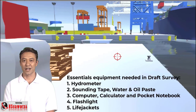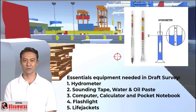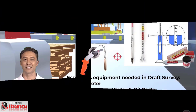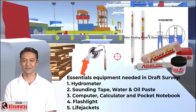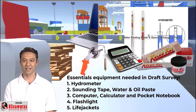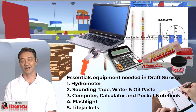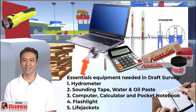Here are some essential equipment needed in draft survey: one hydrometer, one sounding tape, one water and oil paste, three computers or calculators, packet notebooks, four flashlights, and five life jackets — worn while doing readings from a boat with conventional draft readings.